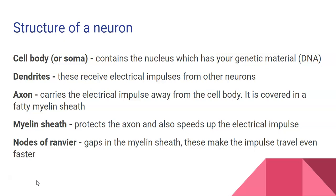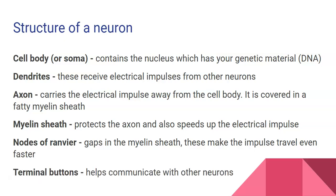Along the axon, you've also got the nodes of Ranvier — these are gaps in the myelin sheath — and these make the impulse travel even faster. Finally, at the end, you've got the terminal buttons, which help the neuron communicate with other neurons.